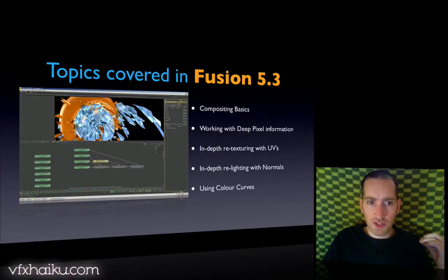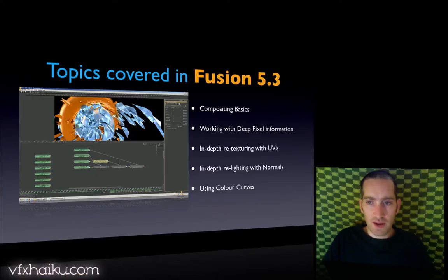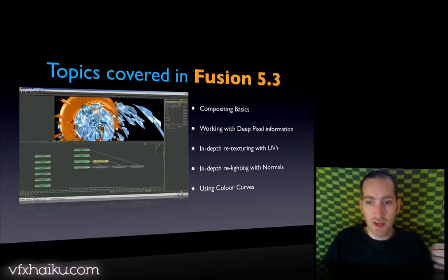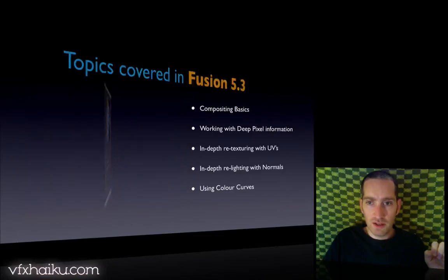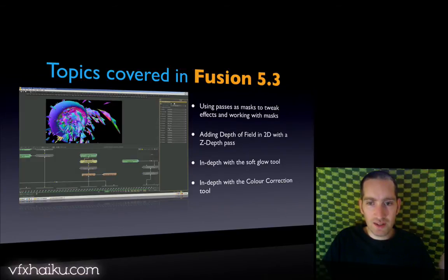Once we're finished in Cinema 4D, we jump into Fusion 5 and go over a quick intro to compositing to get the bare basics down. Then we jump right into deep pixel information and start looking at things like normal passes and UV passes — retexturing with UVs in quite a bit of depth, relighting your objects with normal passes, color curves, and using different passes as masks to tweak certain effects.